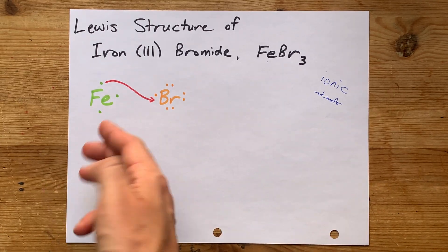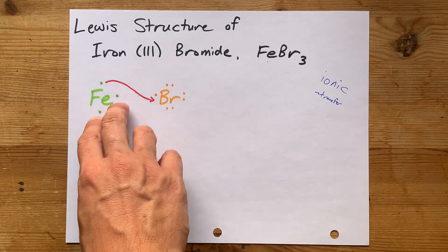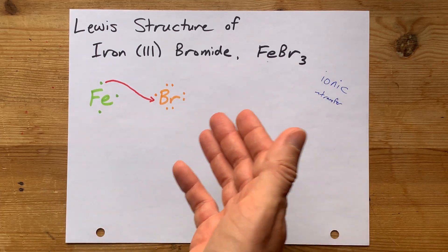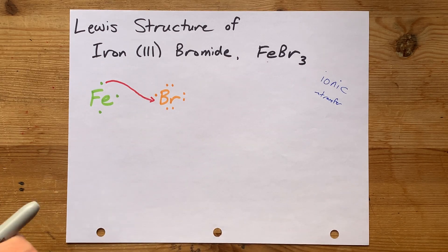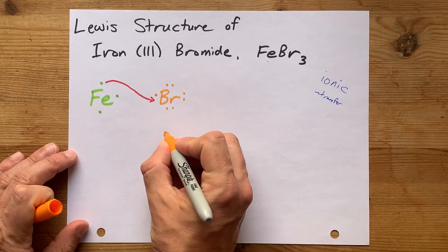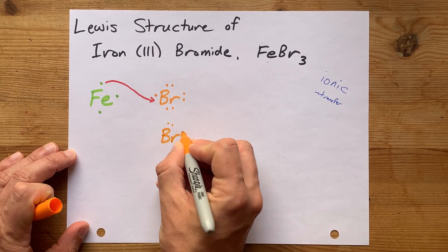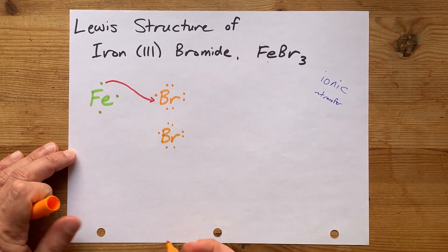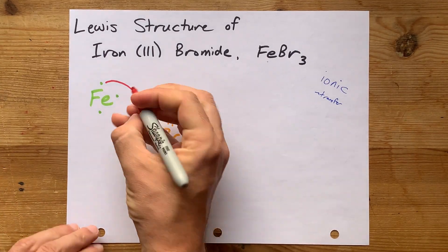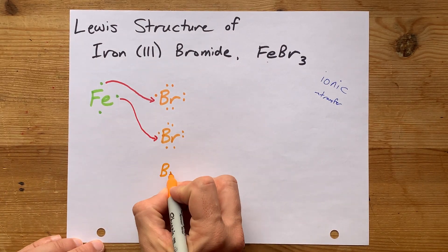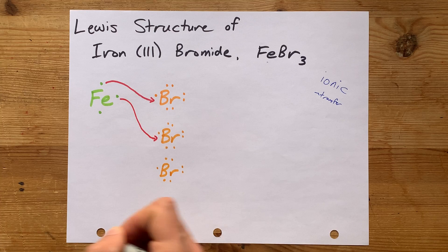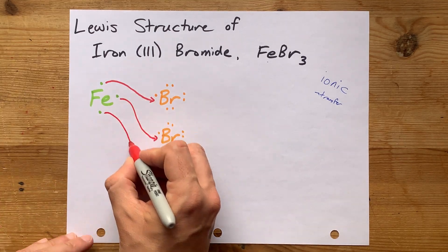Unfortunately, the iron is not yet stable or happy. You know, as happy as atoms can be, because it still has extra valence electrons to deal with. Where will they go? Well, the answer is, if we have an extra bromine around, then one of those electrons can go to complete its octet. And another bromine can accept another one of iron's valence electrons.